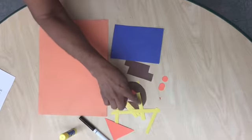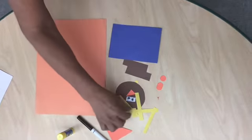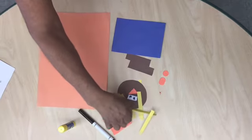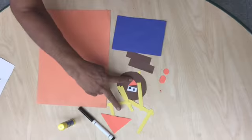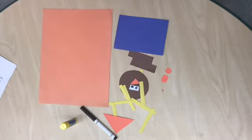And one, two, three, four, five, six, seven yellow rectangles, and that's going to be for my hair, and two triangles and some googly eyes.